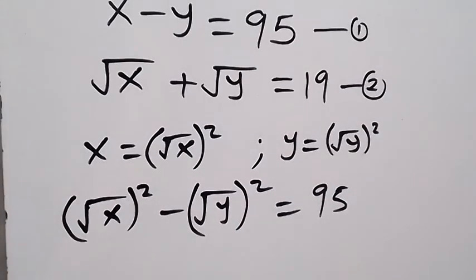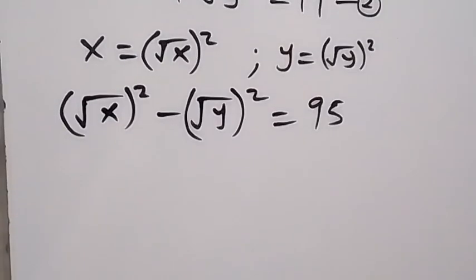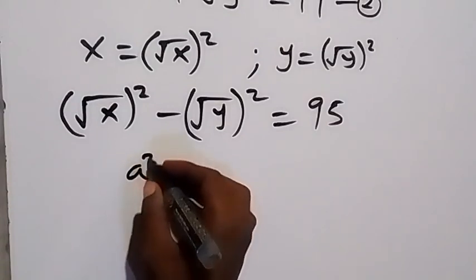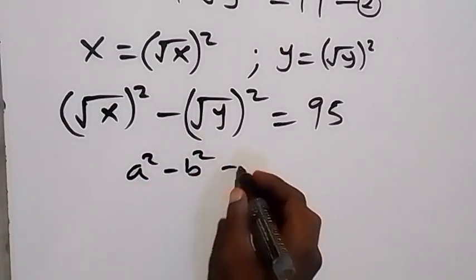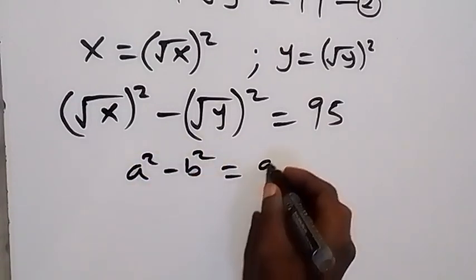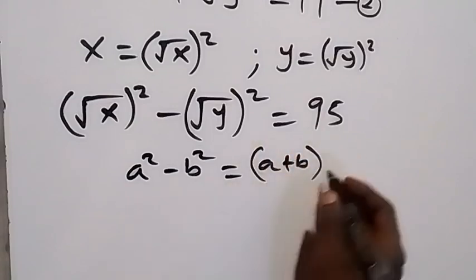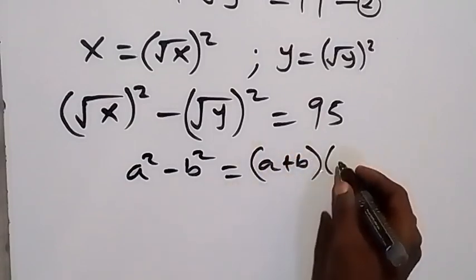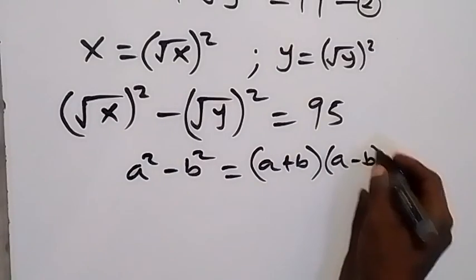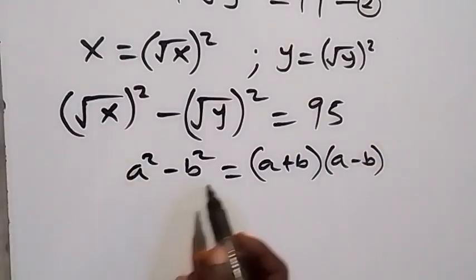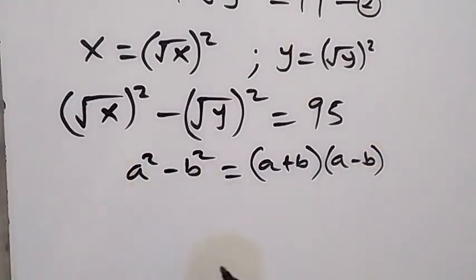Applying the identity for difference of two squares — that is, a squared minus b squared is the same as (a + b)(a − b) — we treat a as root x and b as root y.